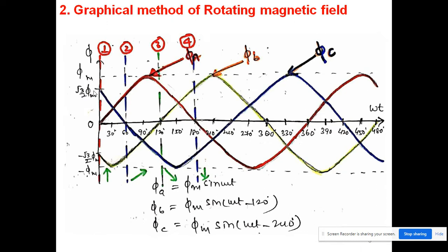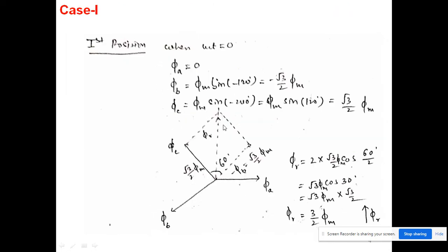Now I will consider four cases — case 1, 2, 3, and 4 — and check what the magnitude and direction of the rotating flux will be at each of these points. For each of the four cases I will check the magnitude and direction of the resultant flux.